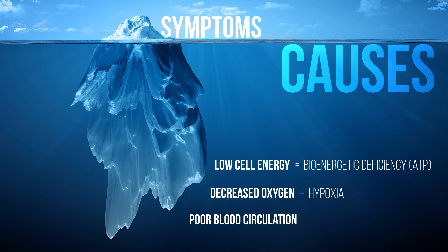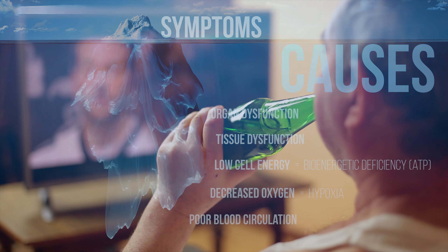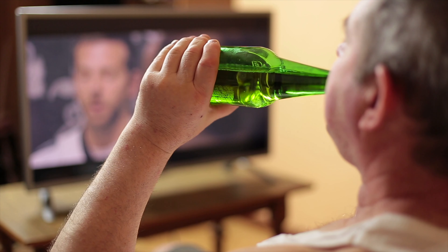Poor blood circulation, as you can see here, can lead to decreased oxygen and therefore low energy states within our cells. That means lack of blood flow, which then yields hypoxia — low oxygen — and then bioenergetic deficiency, meaning low ATP. ATP, in short, is the currency for energy in our body.